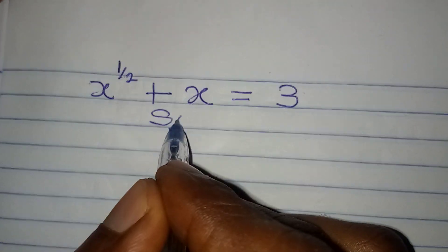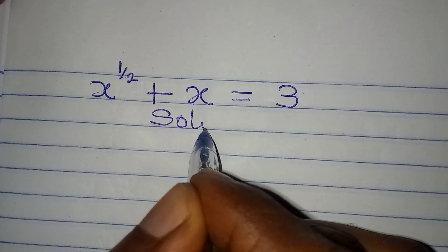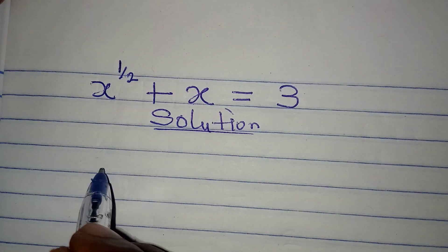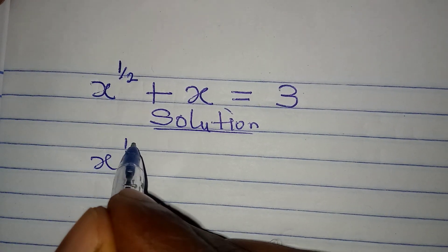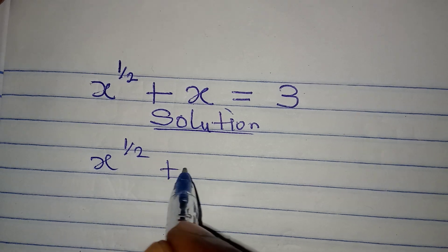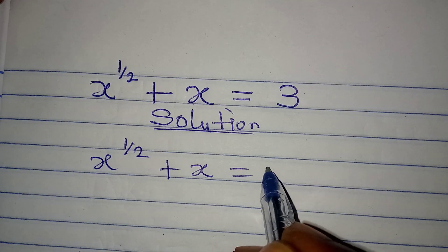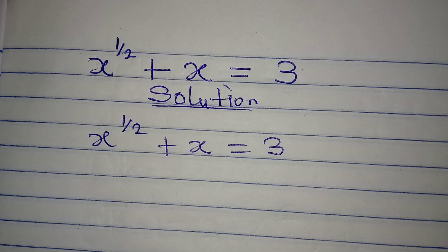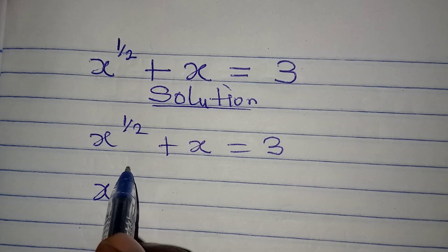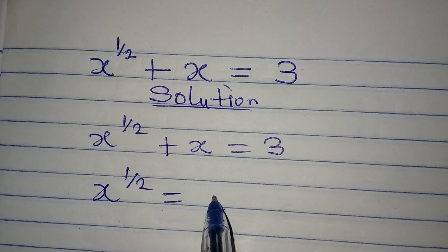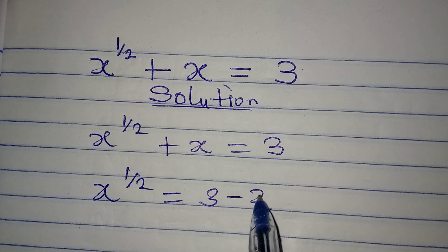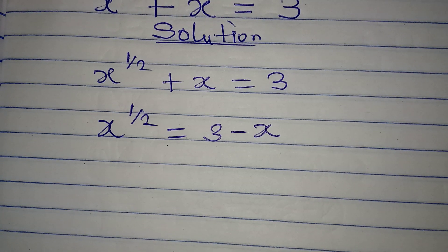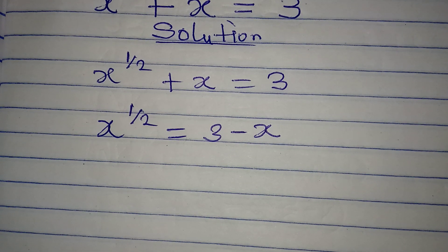Hello everyone. Let's solve this problem very quickly. We have x to the power of 1 over 2 plus x equal to 3. So what do I do? x to the power of 1 over 2 is equal to 3 minus x. What I have done is to take x to the right hand side.